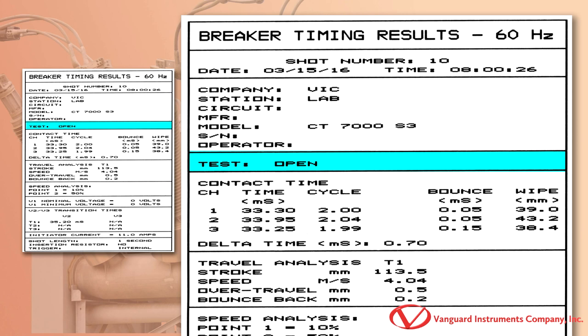The test type is shown in this section. In this case, we can see that the results are from an open test.